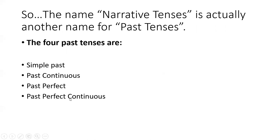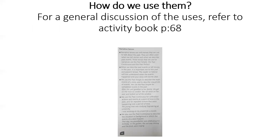The four past tenses are the simple past, past continuous, past perfect, and past perfect continuous. We will be focusing on the first three and will not cover the past perfect continuous in this book. For a general discussion of the uses, refer to your activity book page 68. When we describe past events or tell stories in the past, it is important not to mix past and present tenses, as the reader or listener will not understand when the events happened.